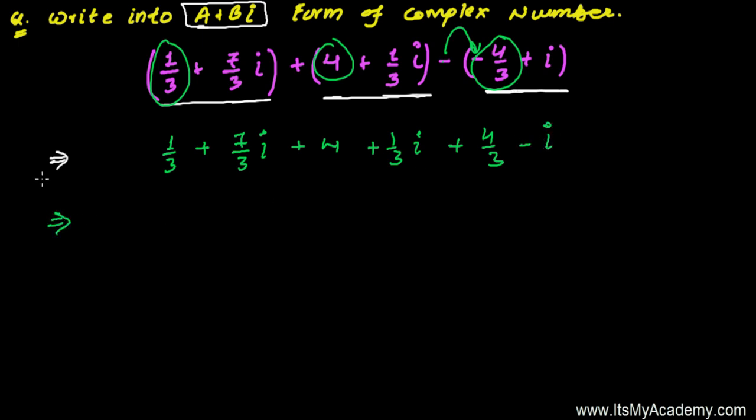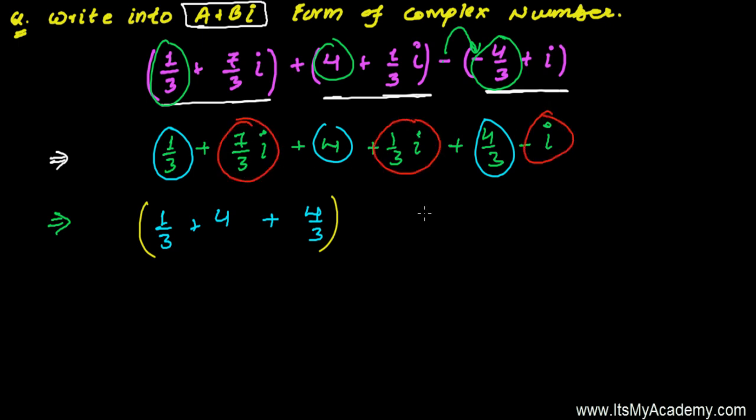Now we have to put together all the real parts: 1/3, 4, and 4/3. Let's write those in a bracket. Next is all the imaginary parts: 7/3i + 1/3i - i.